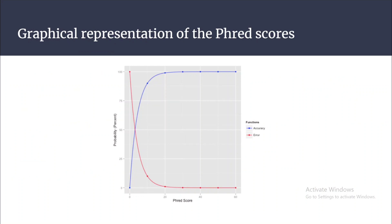This graphical representation shows the Phred scores on the x-axis and probability on the y-axis. The blue line shows accuracy and the red line shows error probability. As the Phred quality score increases from 20 to 30 to 40, the error probability decreases and accuracy increases. That is why a Phred quality score of 20 or more is recommended to confirm good sequencing quality.